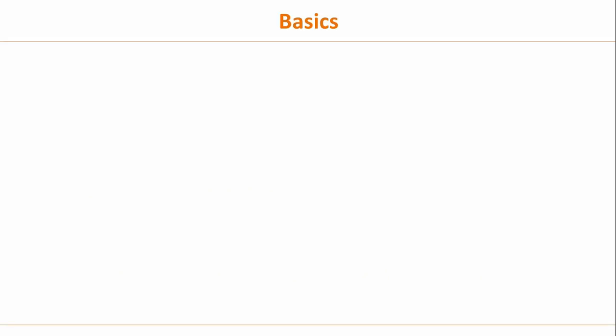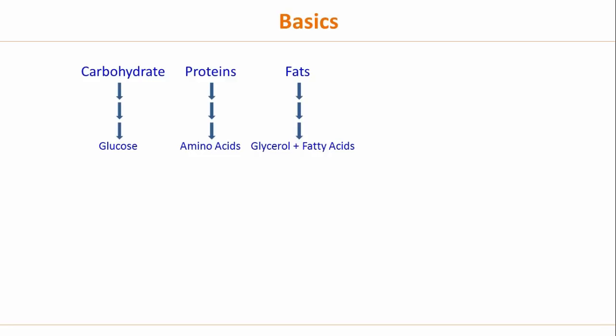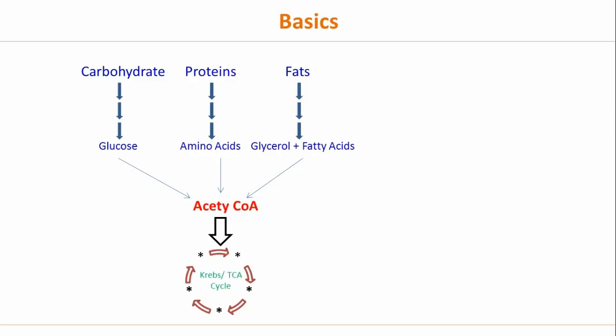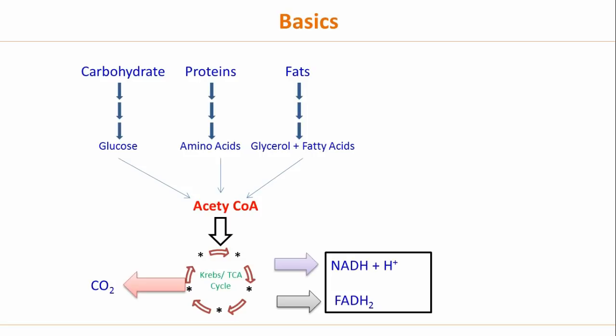Let's look at the role of the electron transport chain in the overall metabolism of our body. We have carbohydrates, proteins, and fats which are broken down into glucose, amino acids, and glycerol plus fatty acids. These three are eventually broken down further into acetyl CoA. The acetyl CoA formed is then taken to the Krebs cycle, or TCA cycle, where it forms carbon dioxide.